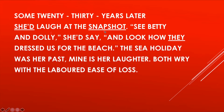Two people are recalling past memories here: first, the poetess recalls how her mother used to laugh looking at the photograph, and in that laughter her mother remembered her childhood. Betty and Dolly are the names of the poetess's mother's cousins who are in the photograph with her. Her mother would say, 'Look how they dressed us up for the beach' — referring to how her parents prepared them so well to go to the beach.